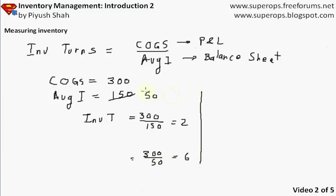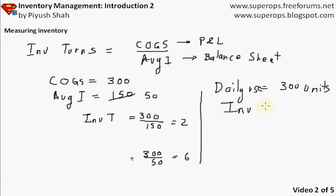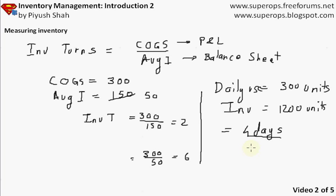Sometimes we measure inventory in days of stock. If my daily use is 300 units and I have 1,200 units on hand, that tells me my inventory is sufficient to last 4 days — I have 4 days of stock. This is a very intuitive way of measuring inventory that everyone in business understands: my inventory will last me the next 4 days, so I need to act before then. These are the two major metrics used for inventory management.